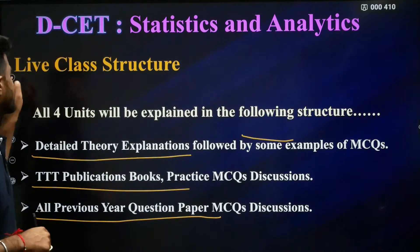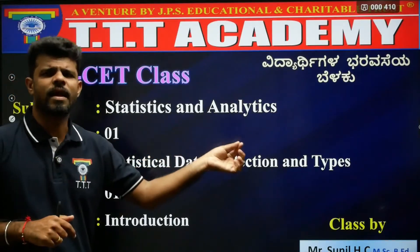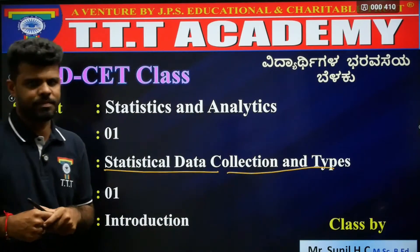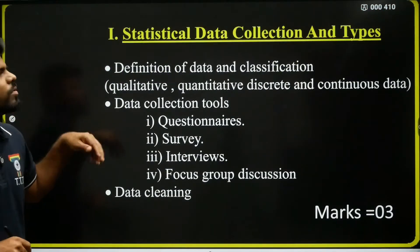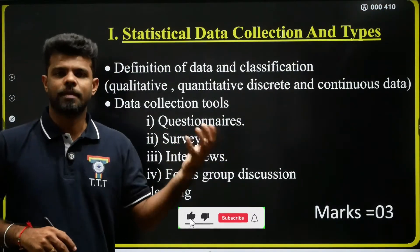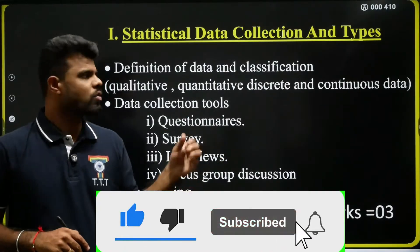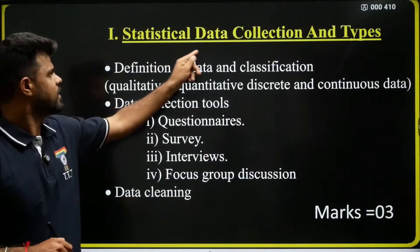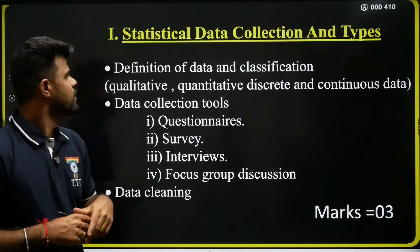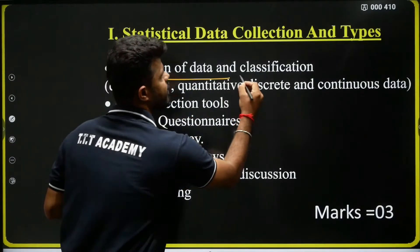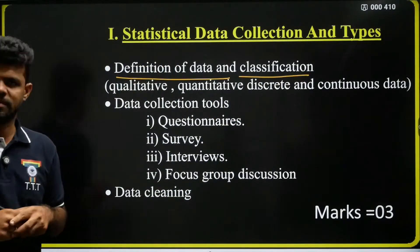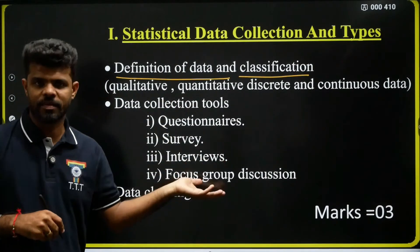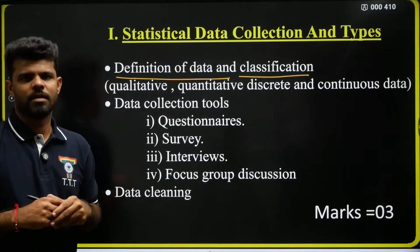We will start with the first chapter called Statistics and Analytics. The first chapter is called Statistical Data Collection and Types. We will discuss in detail the subtopics across these three chapters. In the first chapter, Statistical Data Collection and Types, we will come across the definition of data, definition of classification, and what do you mean by statistics.